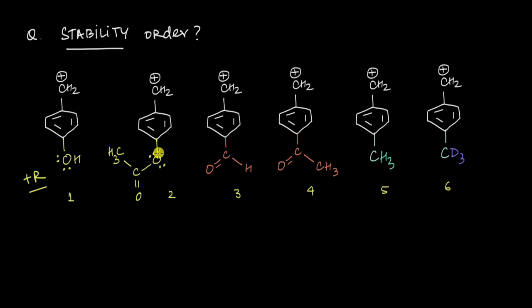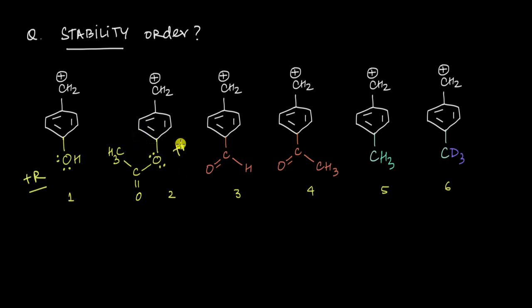Similarly, looking at this particular group — even this one has a lone pair of electrons connected to a double bond, so we can have resonance here as well. This is also going to increase the electron density of the system, so this is also going to be a +R group.